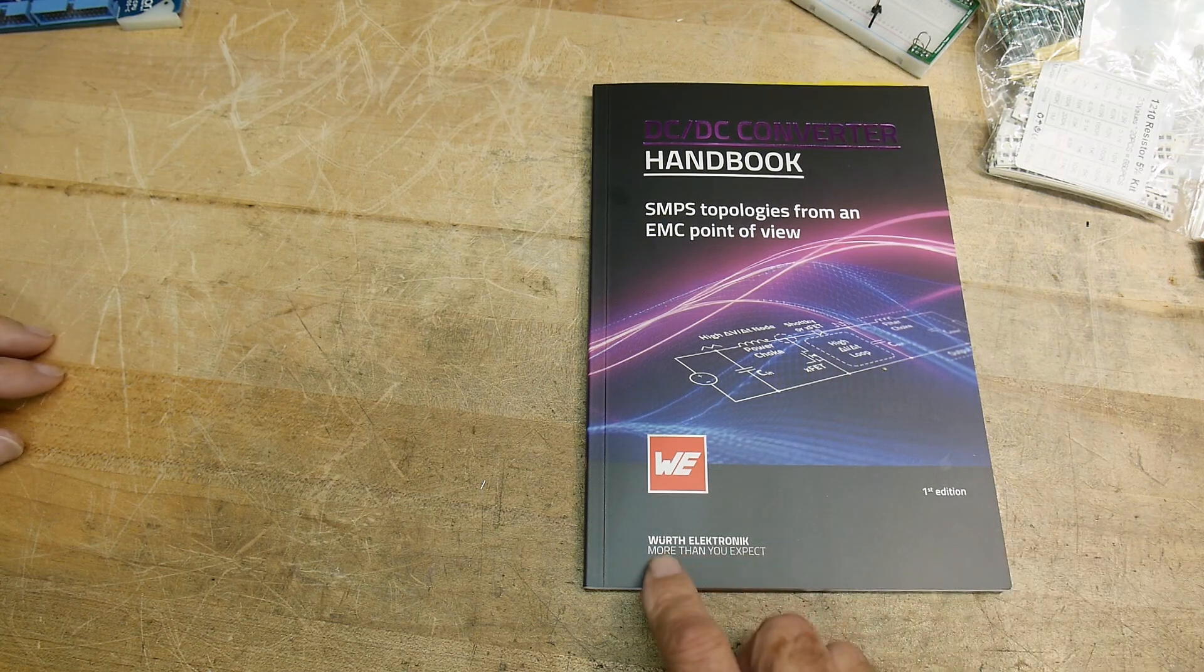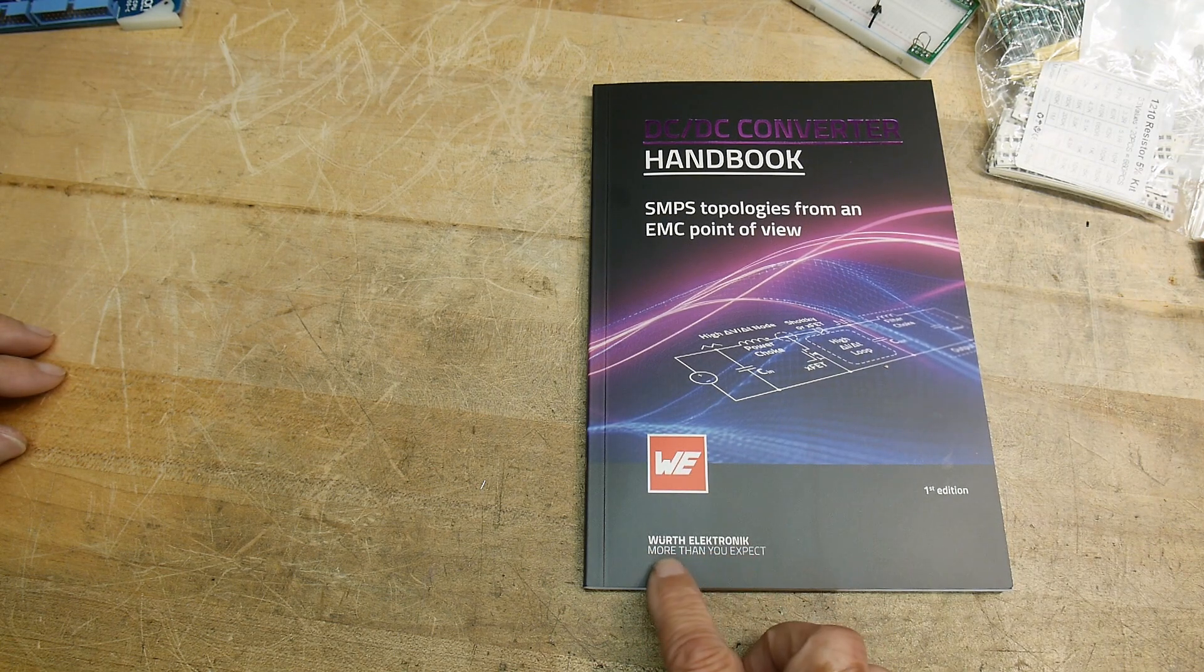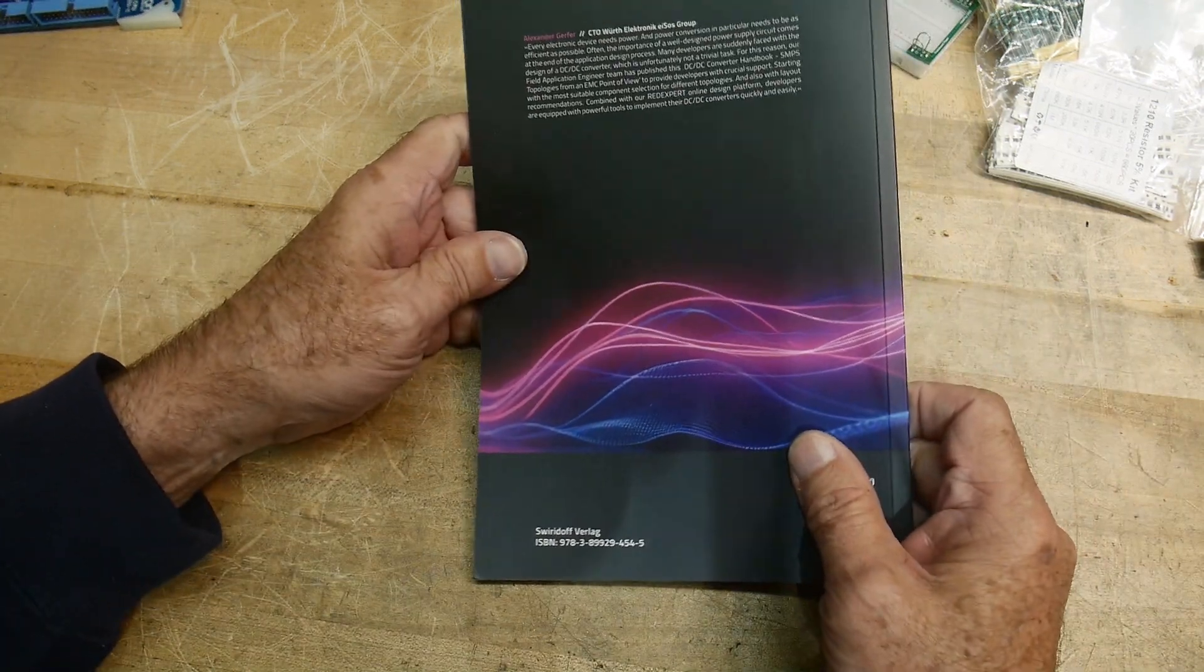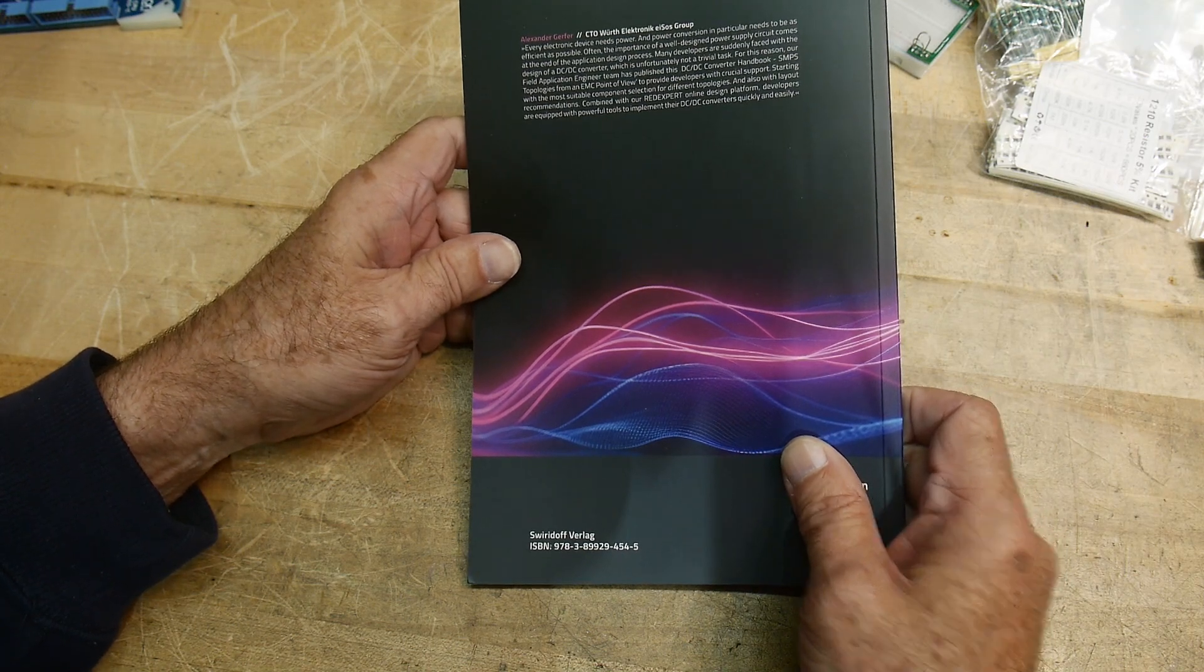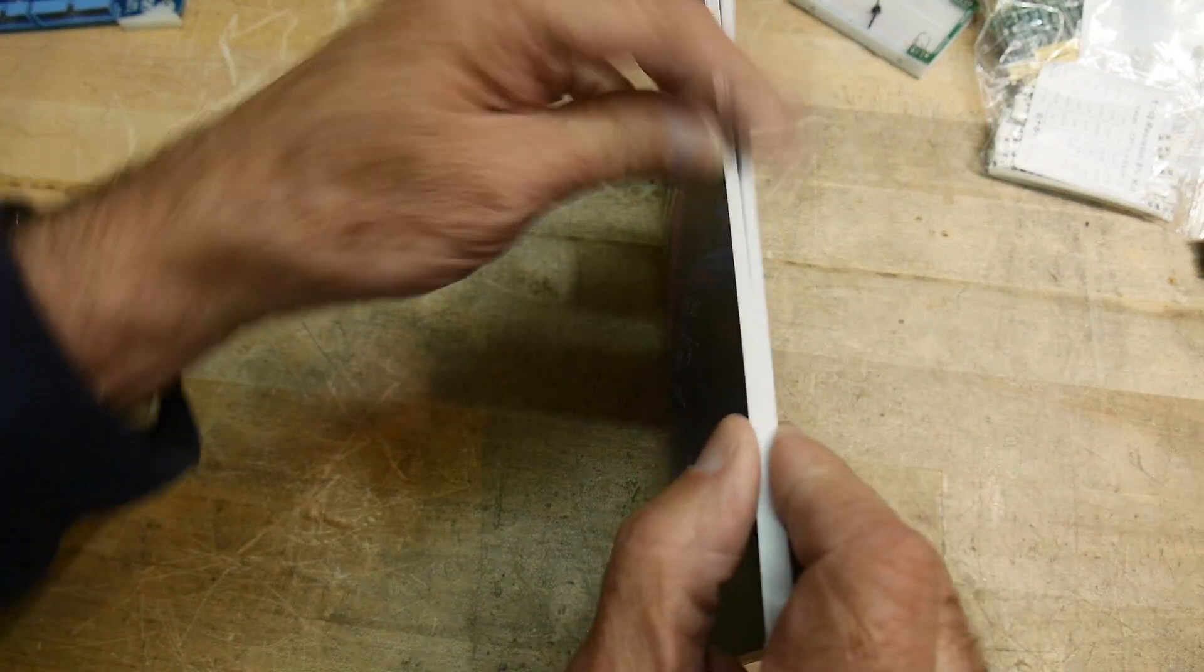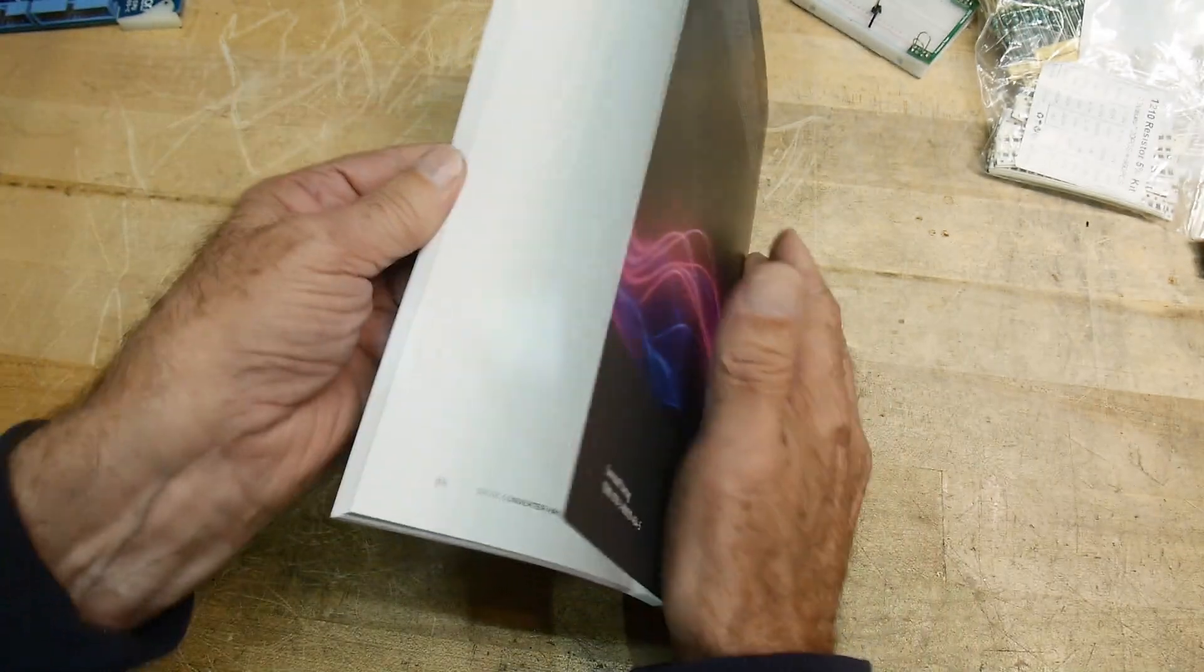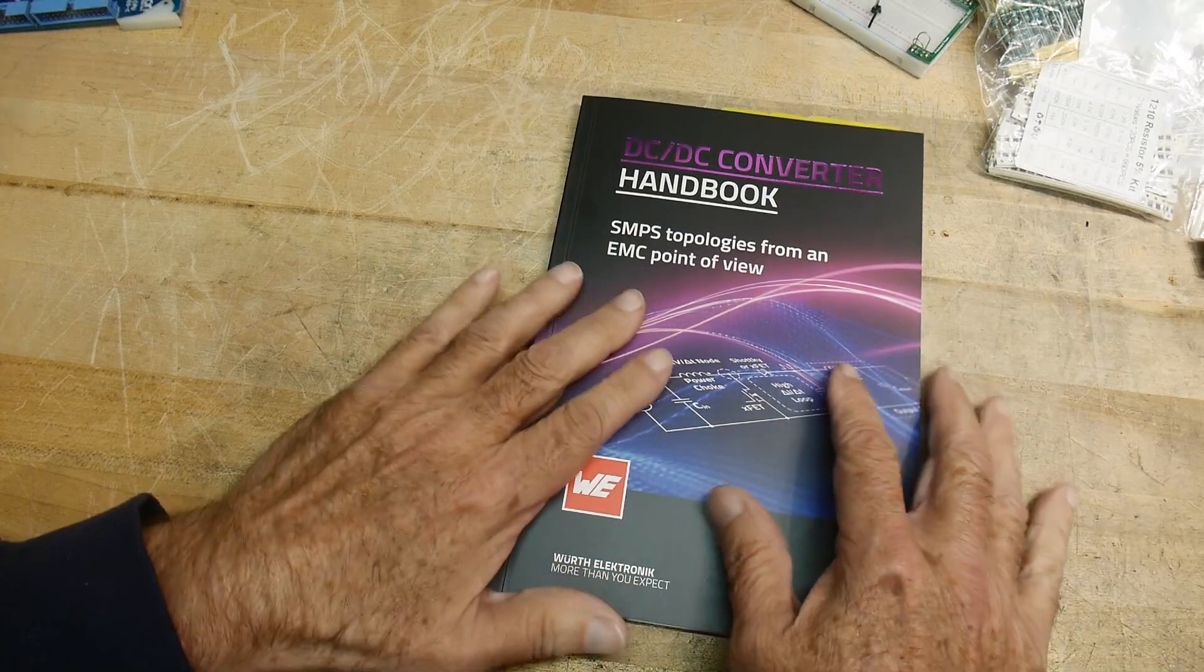This is my review. This is put out by Werthe Elektronik, and they are a company, I believe, in Germany. Anyway, the first thing is it's a very small book. It's only 82 pages, something like that. So it's a small book.